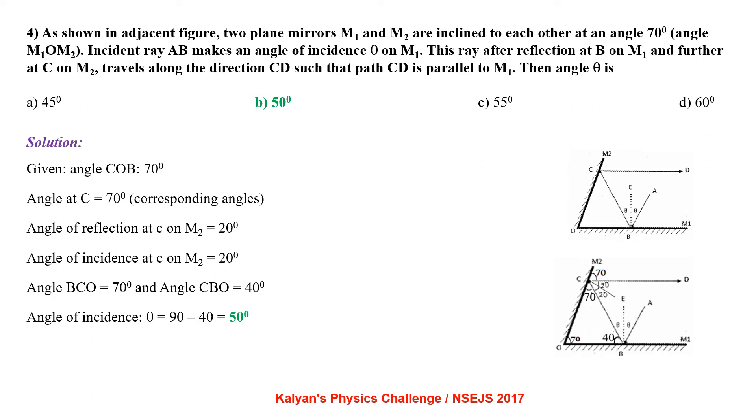Given angle CO be equal to 70 degrees. Angle at C is 70, the corresponding angles being equal. Angle of reflection at C on M2 is 20. So angle of incident at C on M2 will be 20. Angle BCO equal to 70 and angle CBO is equal to 40. So angle of incidence θ equal to 90 minus 40 that is 50 degrees.